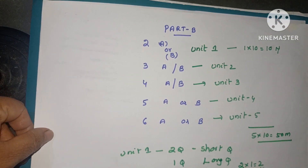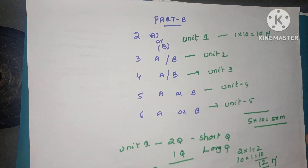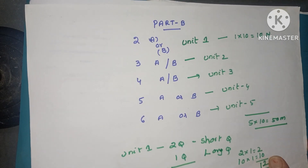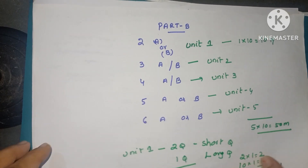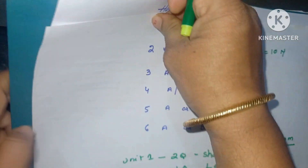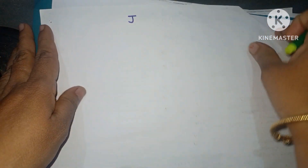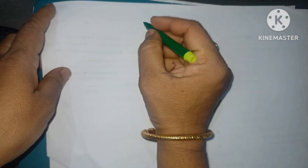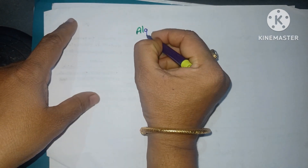Read all the questions carefully, chapter-wise also. In each section A or B, three questions are coming, so do not leave any unit — read all the units carefully, then only you will get a good score. This is the question paper pattern. Now, how to get a good score in PPS, C programming, or CPDES — read all the questions carefully according to your syllabus.